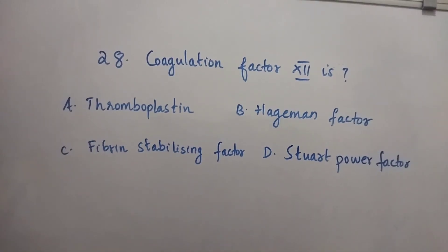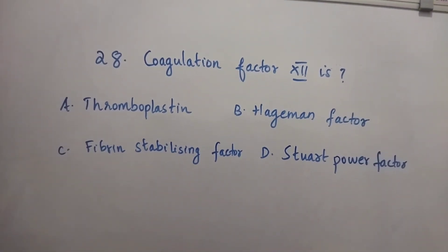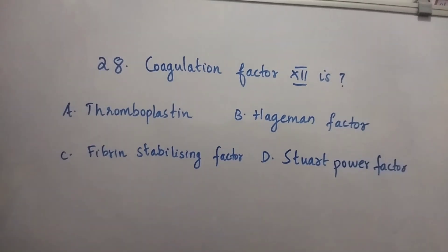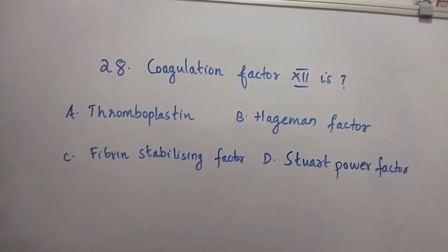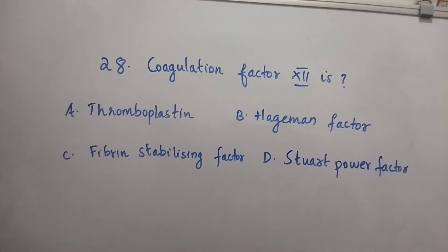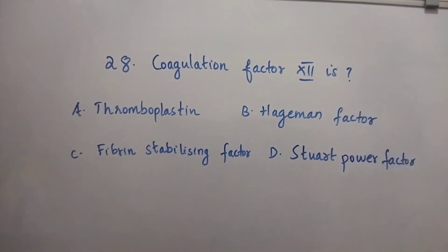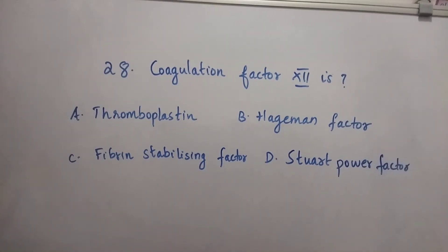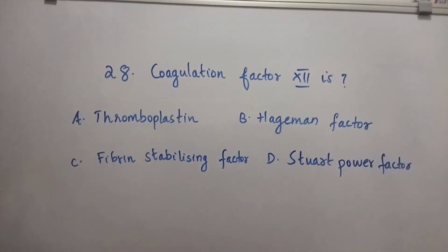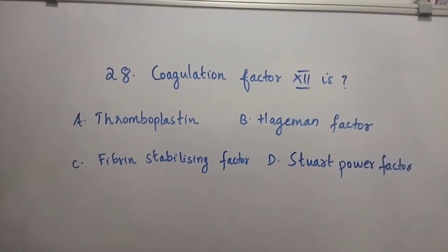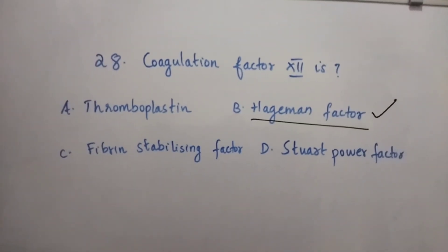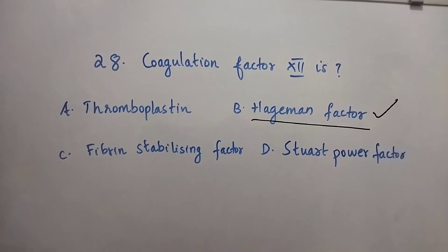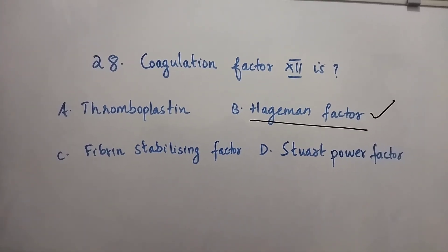Question number 28: Coagulation factor 12 is — Option A: Thromboplastin. Option B: Hageman factor. Option C: Fibrin stabilizing factor. Option D: Stuart-Prower factor. The right answer is Option B, Hageman factor. Coagulation factor 12 is the Hageman factor.